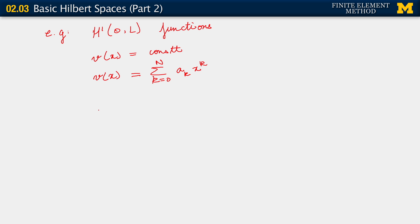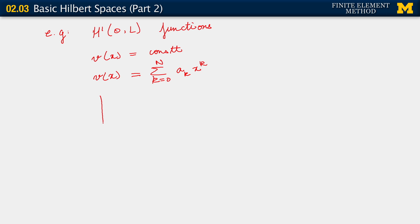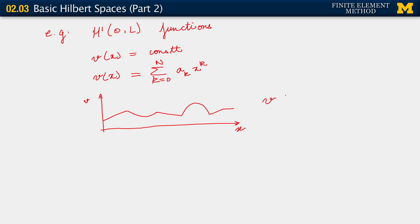There is a third type of function I want to consider. Rather than write it out formally, let me sketch it instead, because it conveys the same idea. Suppose v is of the following form: linear, maybe quadratic, linear again, some other polynomial, linear again, constant. This sort of piecewise function also belongs to H1.